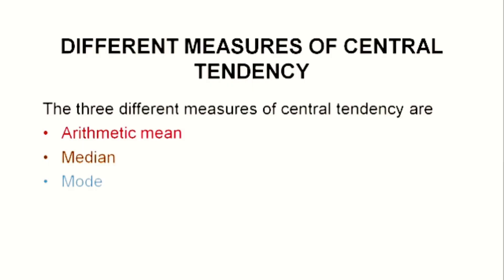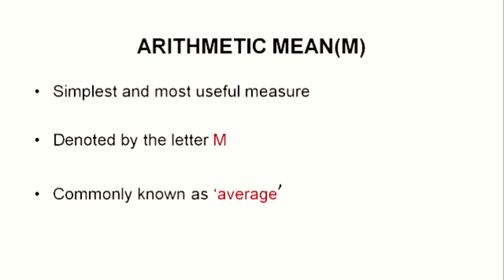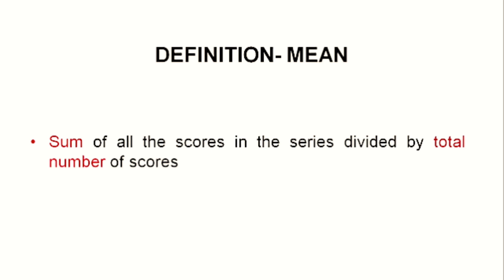The three different measures of central tendency are: the first one, arithmetic mean; the second one, median; and the third one, mode. In this session, I will be speaking about arithmetic mean and mode. Arithmetic mean is denoted by the letter capital M. It is the simplest and most useful measure of central tendency, commonly known as average. Mean can be defined as the sum of all the scores in the series divided by total number of scores.